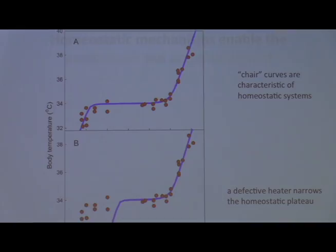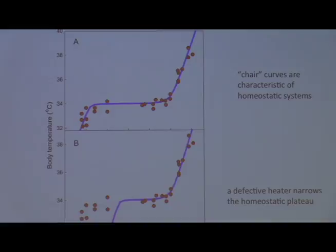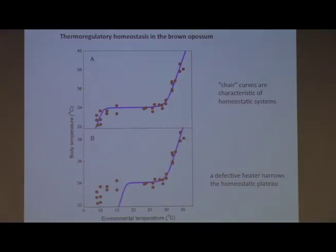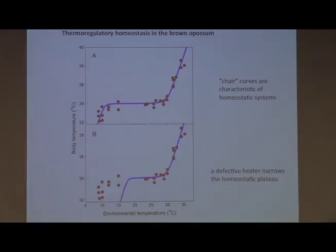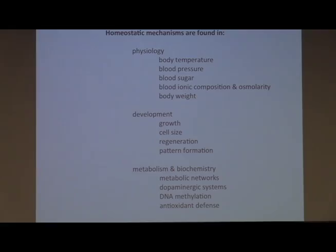Homeostatic mechanisms — you well know about homeostasis in terms of temperature homeostasis. Here in the brown opossum, if you vary environmental temperature over a range, body temperature doesn't change, but the system collapses at low and high temperatures. And if you have a defective heater, then this safe zone over which you can regulate correctly becomes narrower and narrower and failure is more likely.